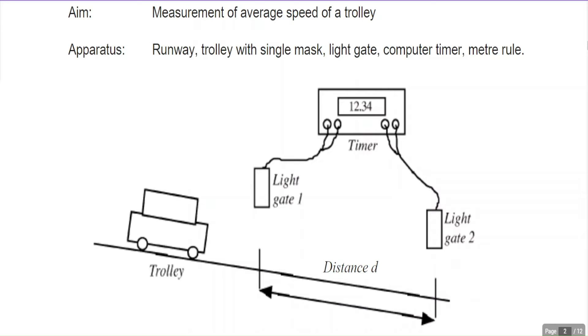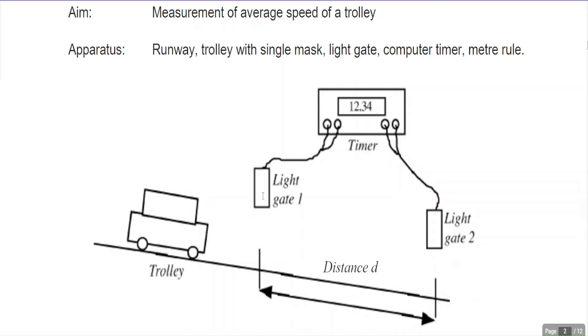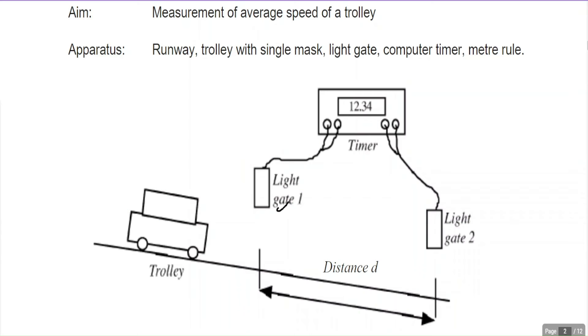Light gates are shown in the picture. This is a trolley that's going to go through a distance d. The timer starts counting when it passes through light gate 1 and stops when it passes through light gate 2. It calculates the speed by finding the time between these two, then distance divided by time. That's one way of doing things.